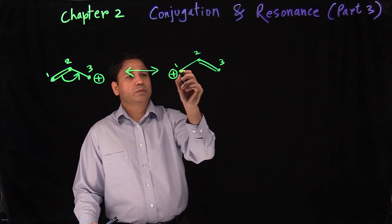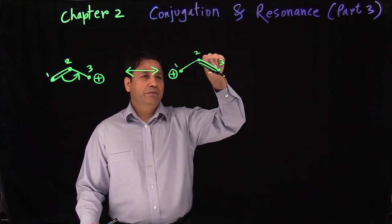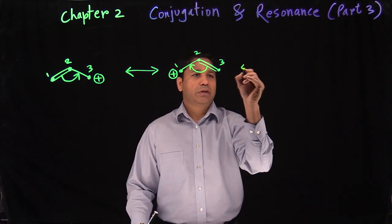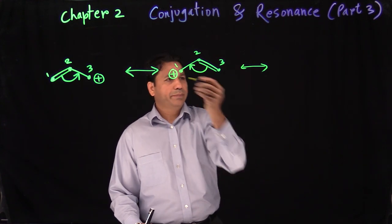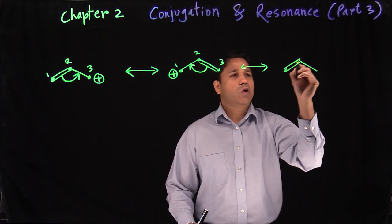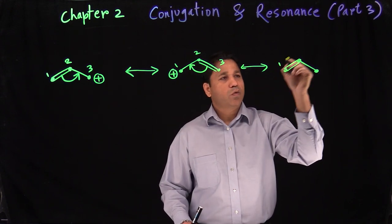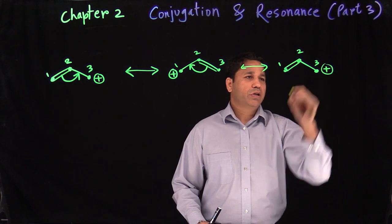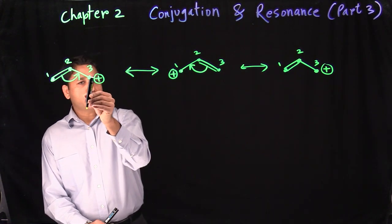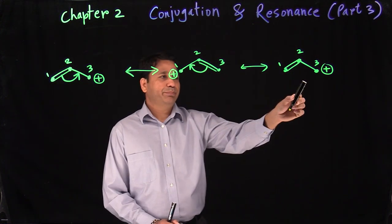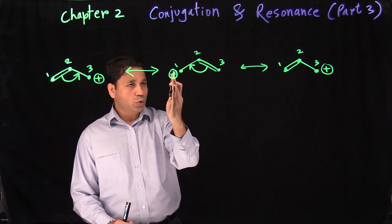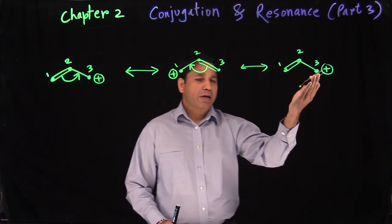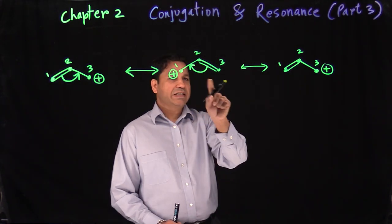We don't move the positive charge with an arrow, but we assume that if you're taking electrons away from a carbon, it gets a plus charge. So carbon one gets the plus charge. If you want to go back, then you bring the electron pair from between two and three back between one and two. Either you go this way or you go this way. If the plus charge ends up back on carbon three — which is where we started — then you stop. We went to one side and came back: that's how we write resonance structures. In this case, we have two resonance structures.